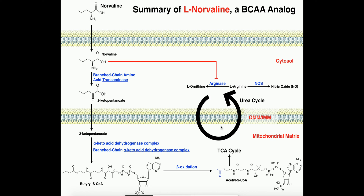Welcome back to exercise physiology on Catalyst University. My name is Kevin Tokoff. In this video we're going to discuss the functions of an amino acid that's not normally found in proteins called norvaline, which is actually an isomer of valine. In some cases we may call it a BCAA analog, although you should notice from the chemical structure its R group is not branched — it's just a constitutional isomer of valine. It turns out that norvaline can be taken as a supplement, available in some drug stores to take before the onset of exercise.